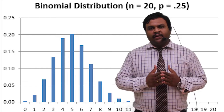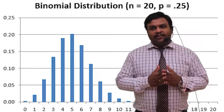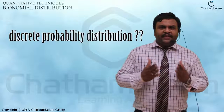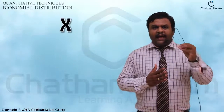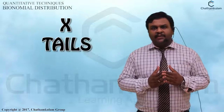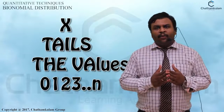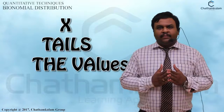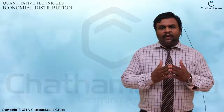Binomial distribution is considered a discrete probability distribution. In the case of discrete probability distribution, the random variable x takes the values 0, 1, 2, 3 up to n. That means there is no value carried in between 0 and 1, or 1 and 2, etc. That is the meaning of discrete probability distribution.